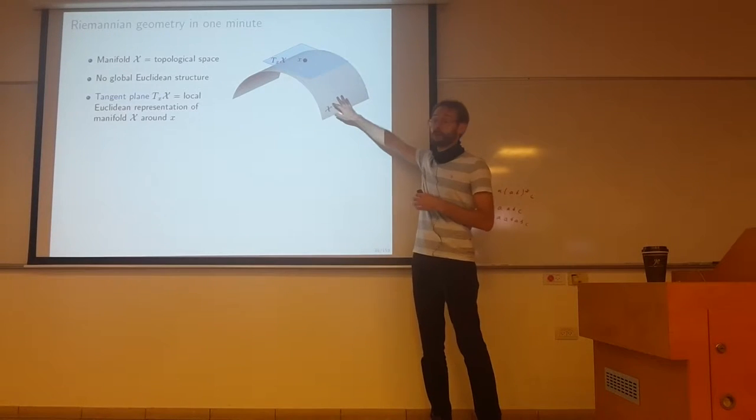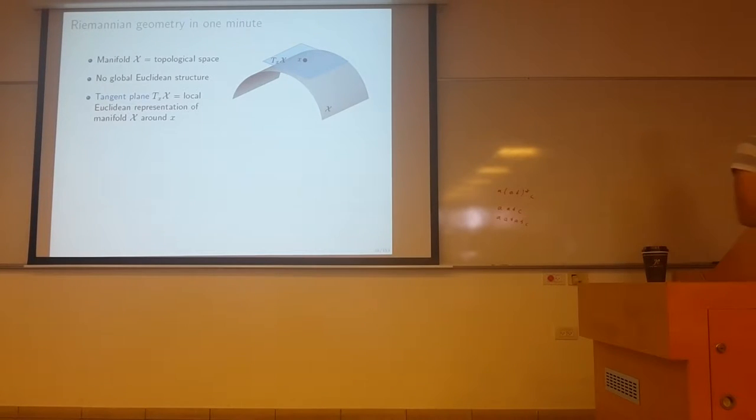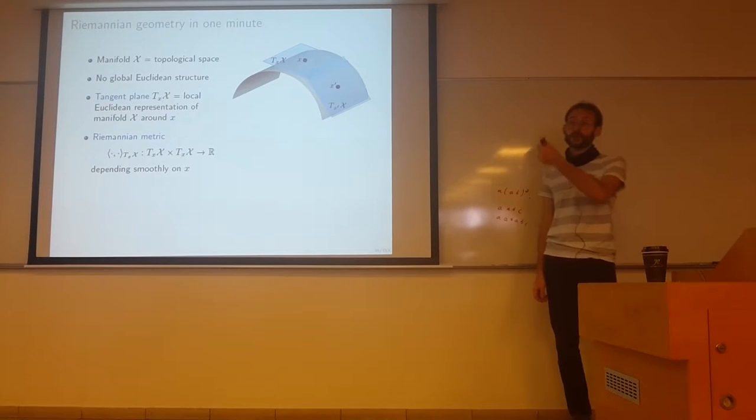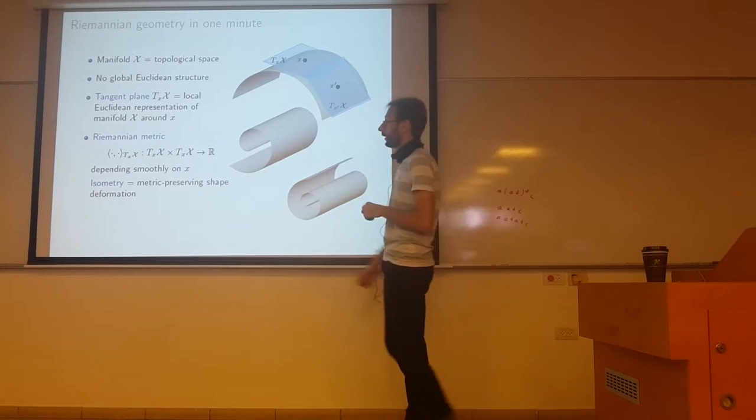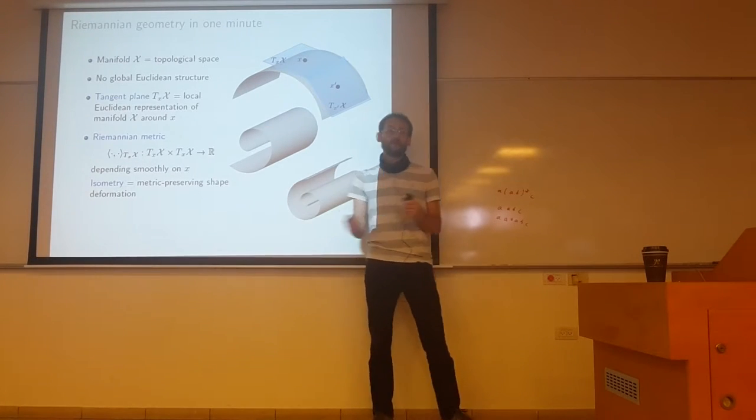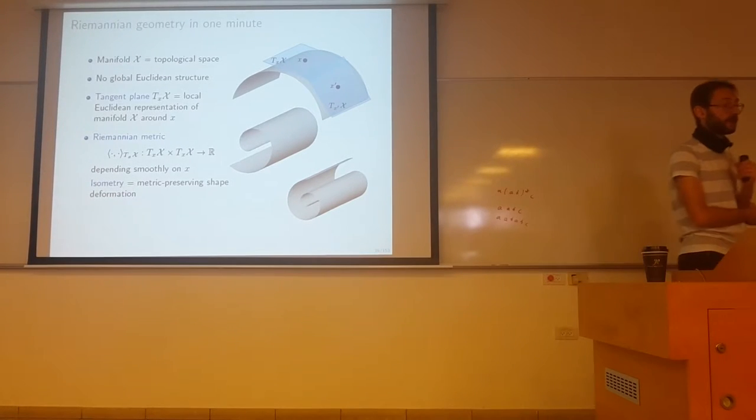Think of surfaces. Basically a locally, a surface is equivalent to a plane that is called a tangent plane. On this tangent plane you can define an inner product that depends simply on the position of the point. That is called the Riemannian metric. And when we say isometry, we imply such deformation or embedding of the surface that doesn't affect the Riemannian metric.